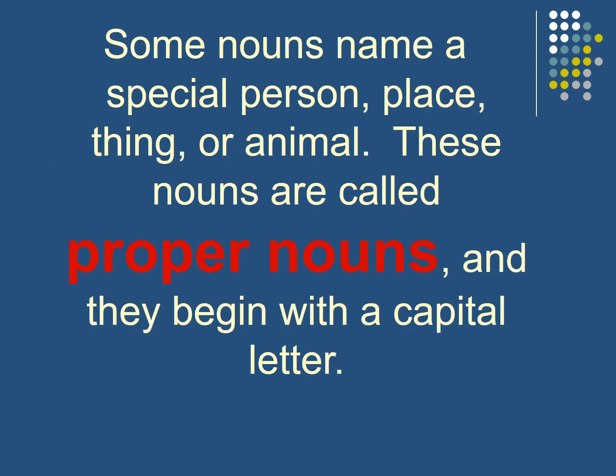Some nouns name a special person. For example, when I give the name of a person — if I have the word boy, boy is a common noun. While if I have Adam, Adam is called a proper noun. So names are called proper nouns and they begin with a capital letter. We have to write them all with a capital letter.